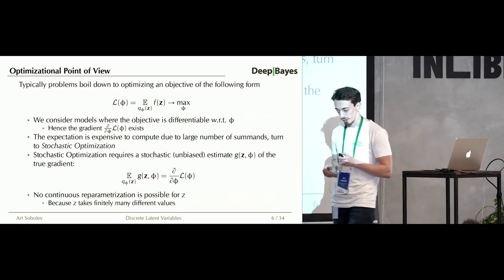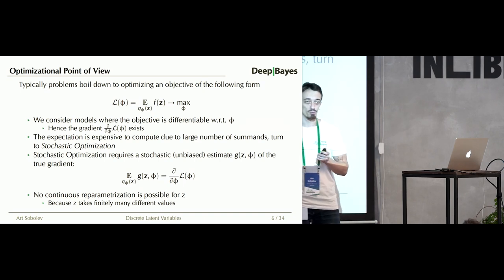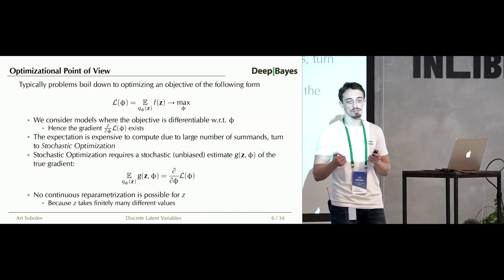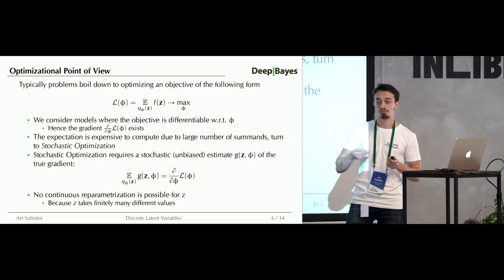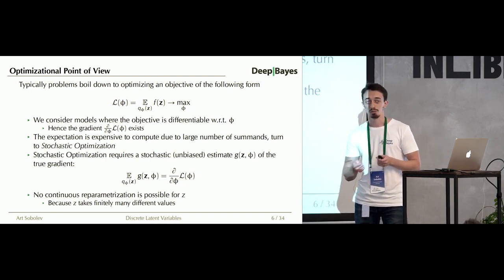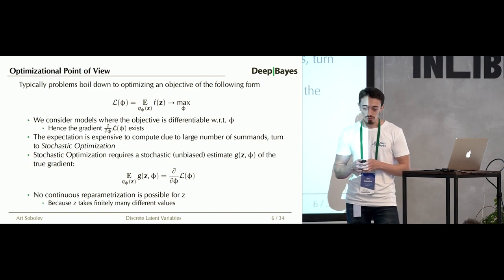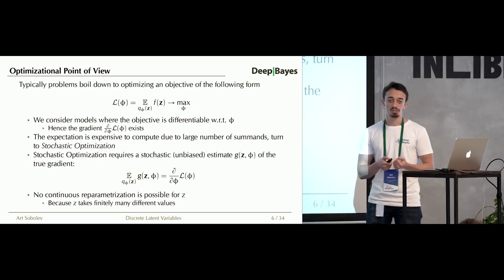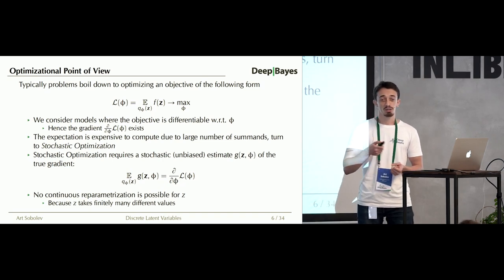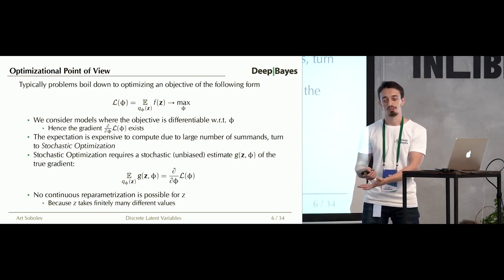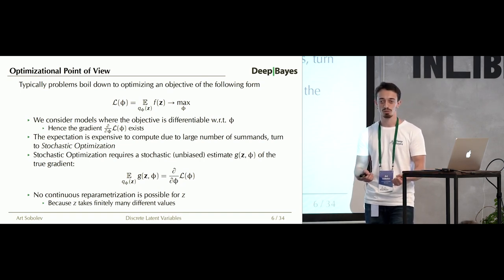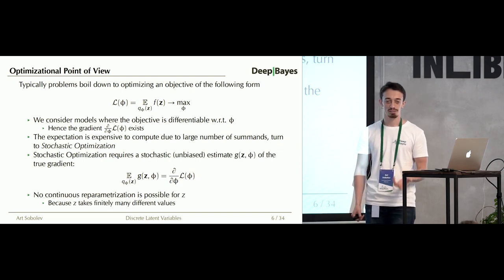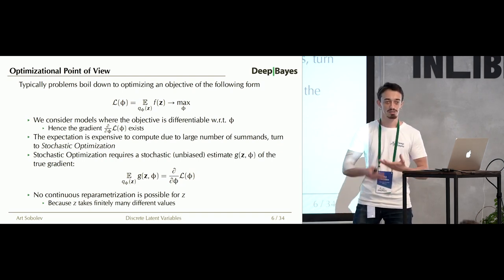From the first lecture, you were presented with the reparameterization-based gradient estimation trick. The big problem with discrete random variables is that although you can write a reparameterization for them, none of those reparameterizations would be differentiable. Every single reparameterization for a discrete random variable has to be non-differentiable, for the simple reason that discrete random variables take on a finite number of values — and therefore cannot be differentiable.